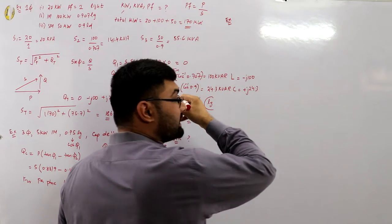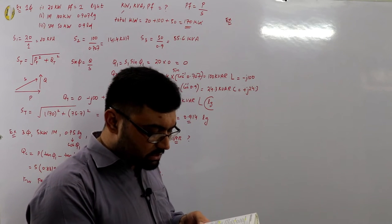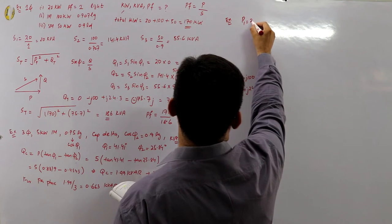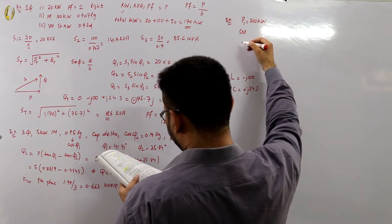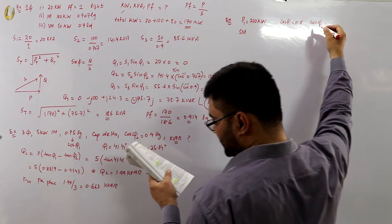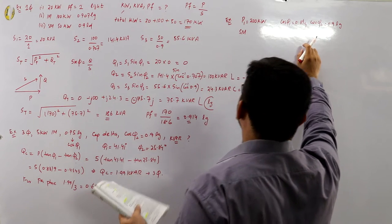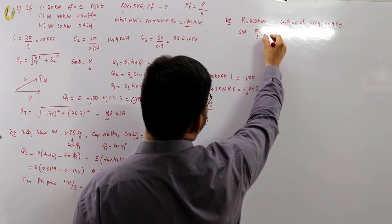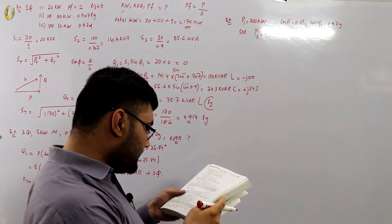Example 6.9 — an alternative method compared to the previous video: A synchronous motor improves the power factor of a load of P₁ = 200 kilowatts from cos(φ₁) = 0.8 lagging to cos(φ₂) = 0.9 lagging. Simultaneously, the motor carries an additional drive load of P_synchronous = 80 kilowatts. Find: the leading KVAR taken by the motor, the KVAR rating, and the power factor of the motor.